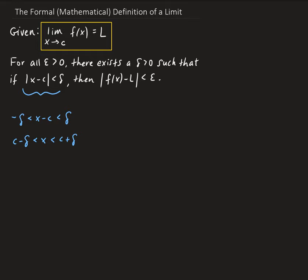Another way to write this: x belongs to the interval (c minus delta, c plus delta). In math, this is sometimes referred to as a neighborhood. So x belongs to this neighborhood with a lower bound of c minus delta and an upper bound of c plus delta.